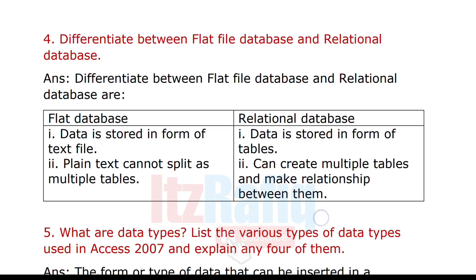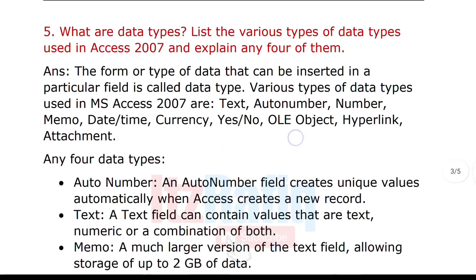What are data types? List various types. Data types define what type of data is stored in a field. For example, in a student table, roll number would be number type, name would be text, and date of birth would be date and time. The different data types available in MS Access are: text, auto number, number, memo, date/time, currency, yes/no, OLE object, hyperlink, and attachment.